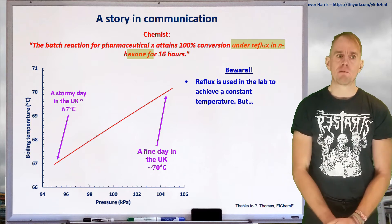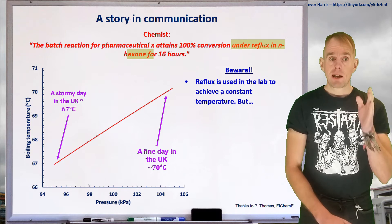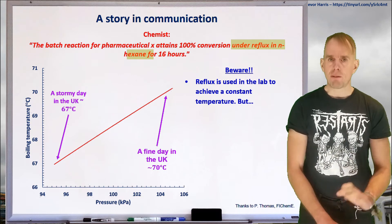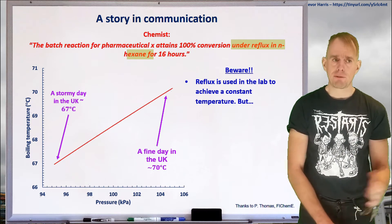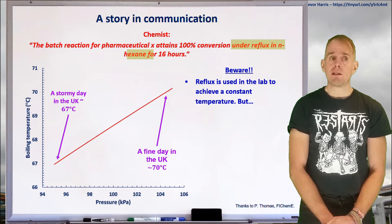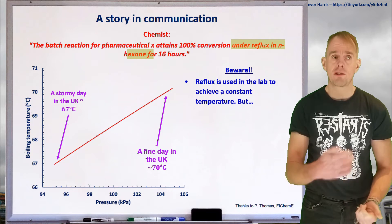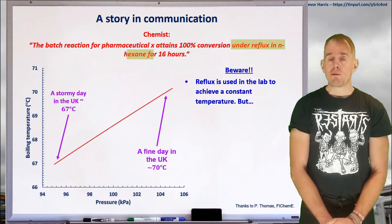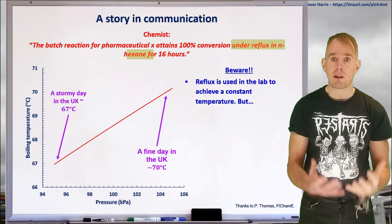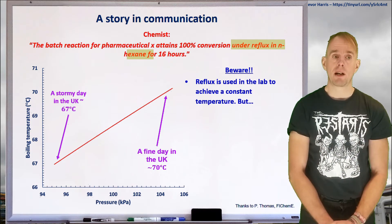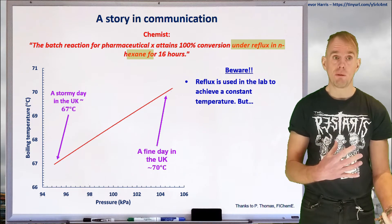So here on the whiteboard, I've put a graph of the boiling temperature of N-hexane as a function of pressure. 100 kPa is roughly standard atmospheric pressure. 94, 95 kPa is going to be typically what you'd expect on a stormy day in the UK when a low pressure system comes over. 104, 105 kPa is the atmospheric pressure you can expect in the middle of the summer when you've got a nice, fine, high-pressure system established over the UK.